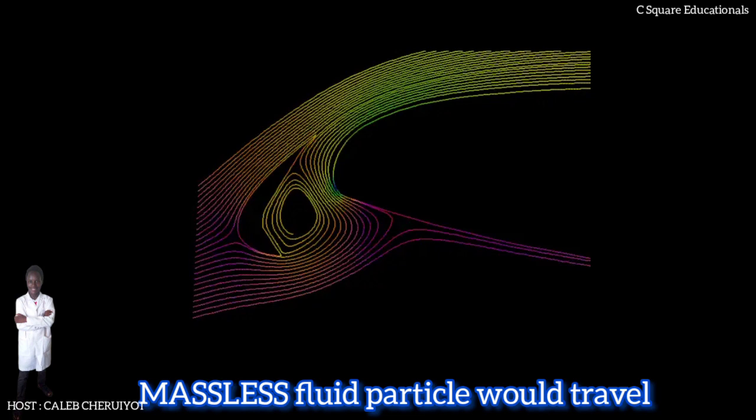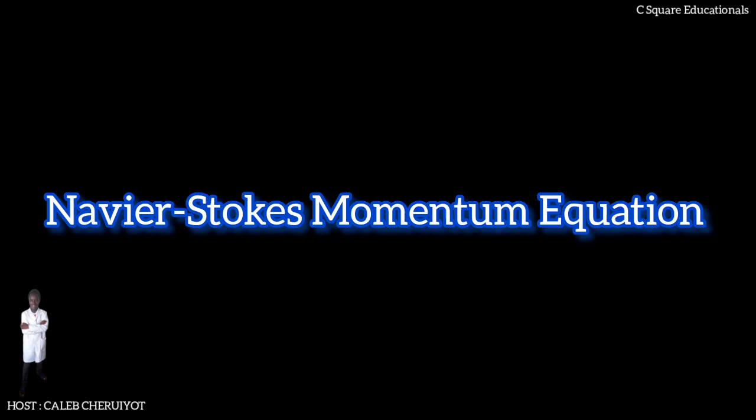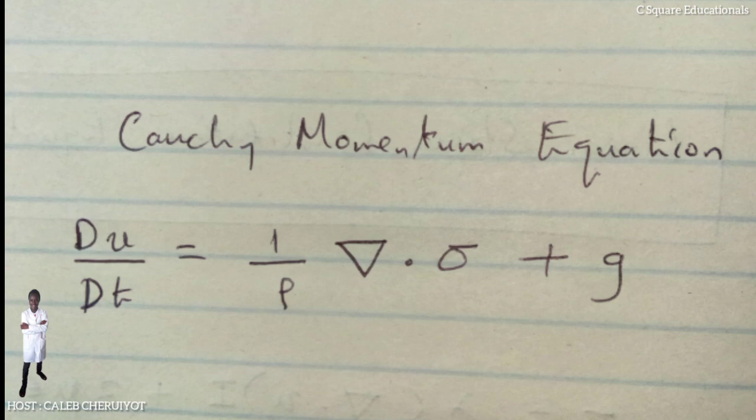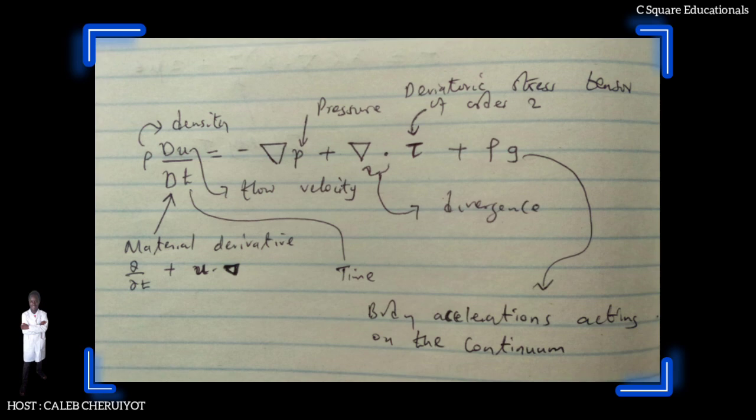The Navier-Stokes momentum equation can be derived as a particular form of the Cauchy momentum equation whose general convective form is rho du/dt = (1/rho)∇·σ + g. By setting the Cauchy stress tensor sigma to be the sum of the viscosity term tau (the deviatoric stress) and pressure term p (volumetric stress), we arrive at the Cauchy momentum equation in its convective form: rho du/dt = -∇p + ∇·τ + rho g.